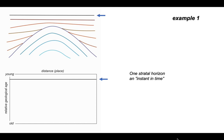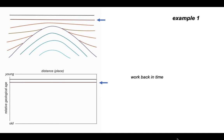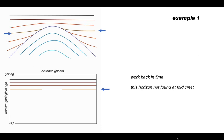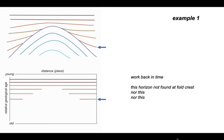The first horizon is assumed to have been deposited in an instant in time, so it plots as a single age — a horizontal line on the chronostrat diagram. Moving to the next oldest and the next oldest, as we trace one horizon across the cross-section, we find it is not present on the crest of the fold — it banks against the fold. So on the chronostrat diagram there's a gap in the middle where that horizon was not deposited. The same motif applies to the underlying horizons: all three have a missing segment across the crest of the fold.